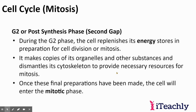So basically in the S phase, the DNA gets replicated. Then in G2, the cell replenishes its energy stores in preparation for cell division or mitosis. It makes copies of its organelles and dismantles its cytoskeleton to provide necessary resources for mitosis. The cytoskeleton proteins break down and actually make the spindle fibers. When it's not doing mitosis, it goes back to the cytoskeleton. Once these final preparations have been made, the cell will enter the mitotic phase.